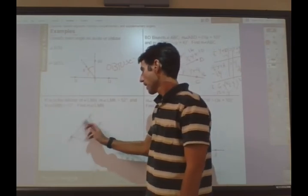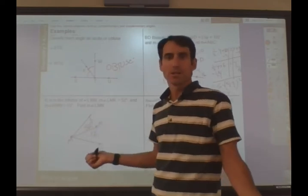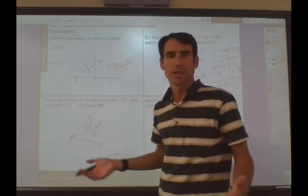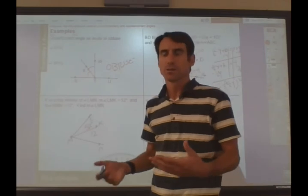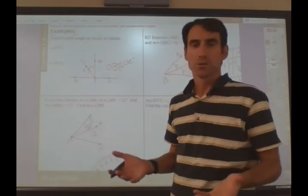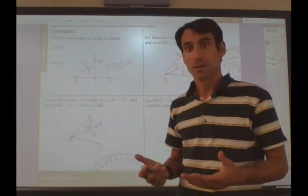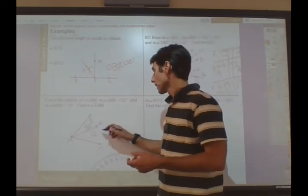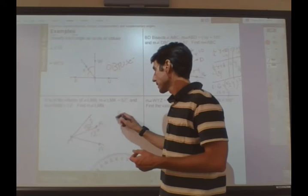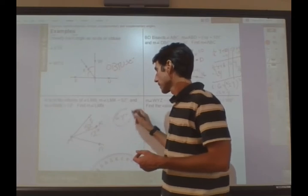Oh, well, this is the angle addition postulate. We have two adjacent angles, then the sum of the two small angles equals the measure of the large angle. All right. So I add these two together and we get 64 degrees. All right. Finally.